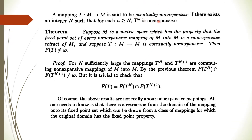Now, what do we mean by eventually non-expansive? A mapping T going from M to M is said to be eventually non-expansive if there exists an integer N such that the Nth iterate of T is non-expansive. Before N — for example T to the power N−1 — that need not be non-expansive. But T to the power N is non-expansive, and after this N every iterate is non-expansive. Then this mapping T is said to be eventually non-expansive.